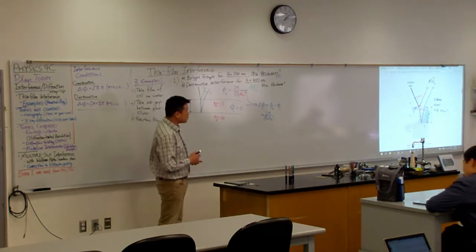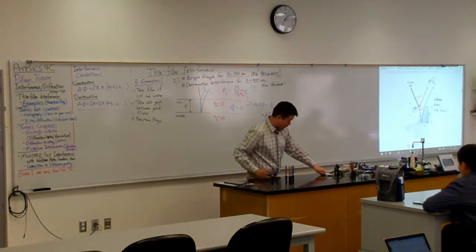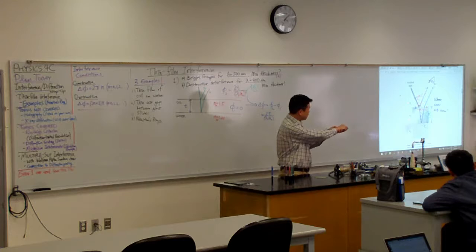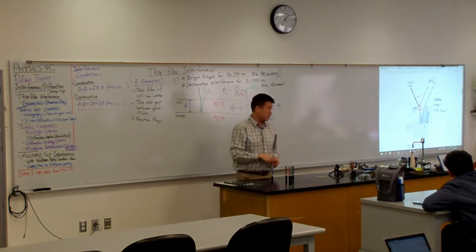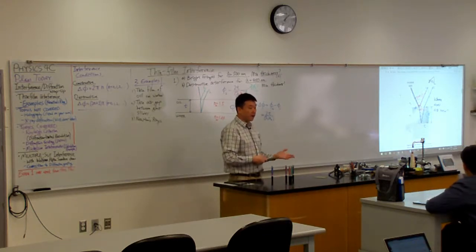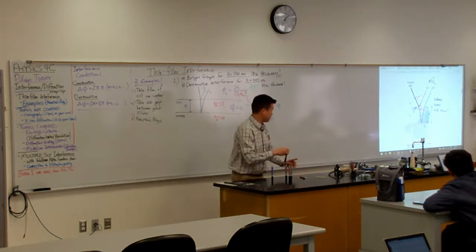This is a rule involving phase shift. Whenever you have reflection going on—reflection from N1 to N2 or reflection from N2 to N3—you have to check for a condition. And depending on what the condition is, you are going to either get a phase shift or not get a phase shift.